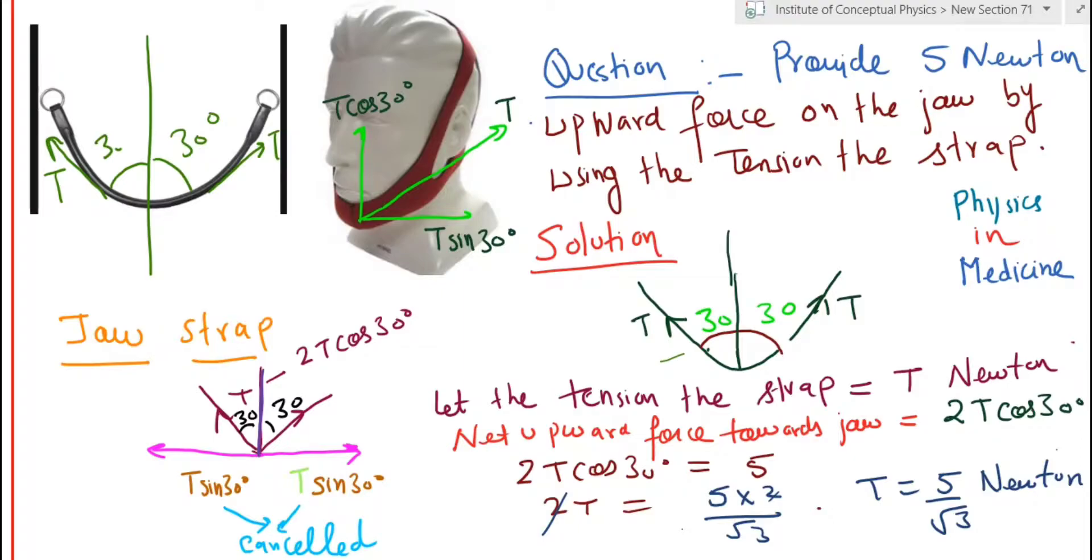So in this numerical, you see our objective is that we want to provide a five Newton force in the upward direction to the jaw. And if you see the strap being worn is making an angle of 30 degrees on either side, or you can say the overall jaw angle is 60 degrees. The jaw angle could be 75 degrees, but I have taken the example of 60 degrees for ease of calculation.